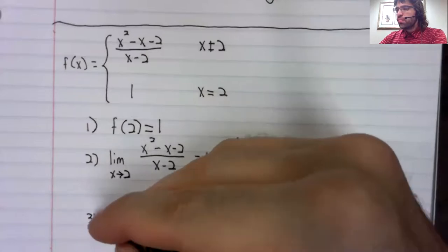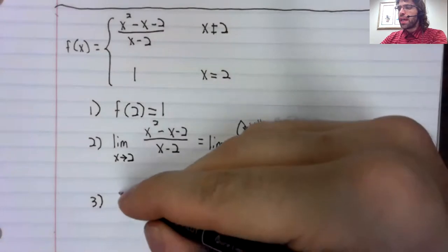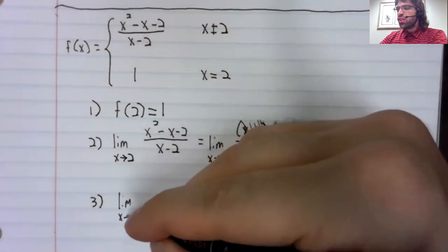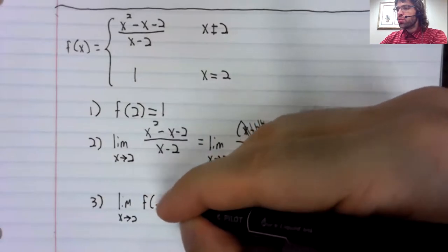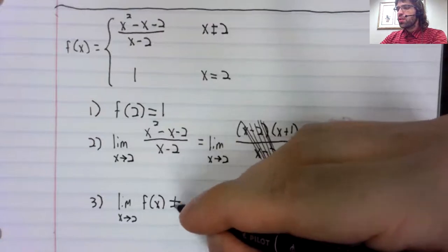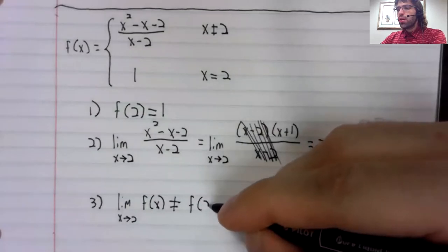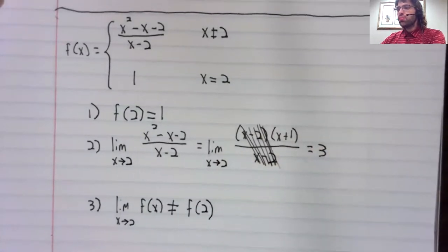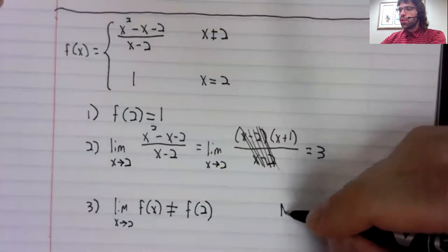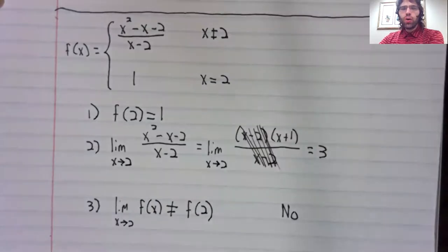But at condition three, we fall down. Because this limit as x approaches two exists, but it does not equal f of two. So our answer is once again, no. This function is not continuous at two.